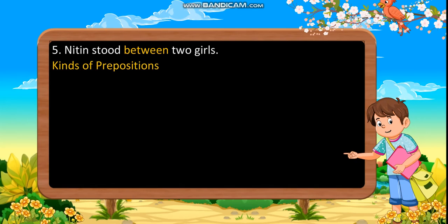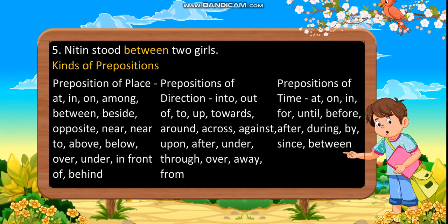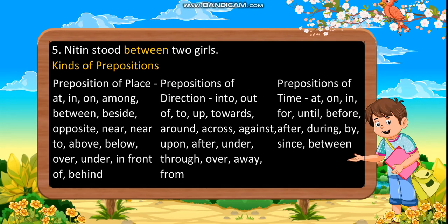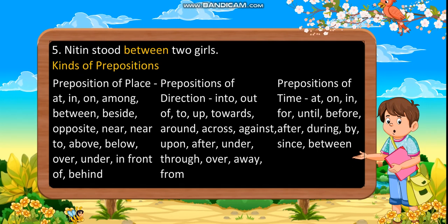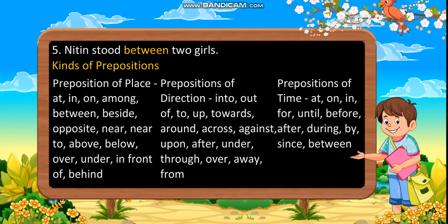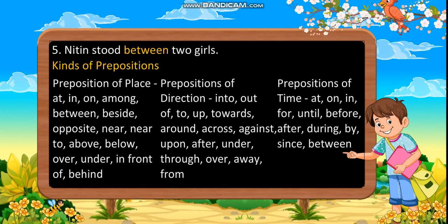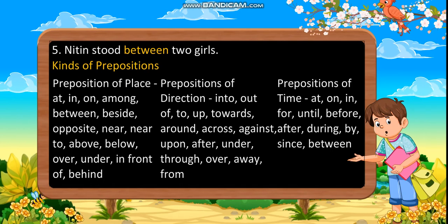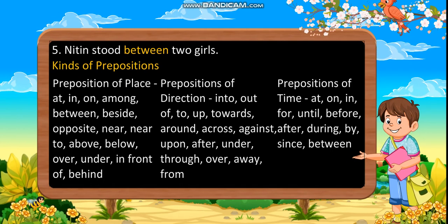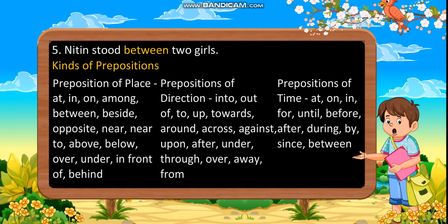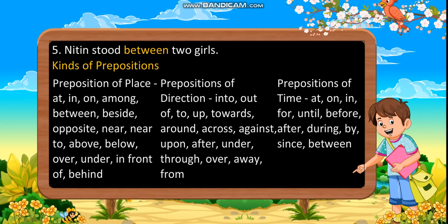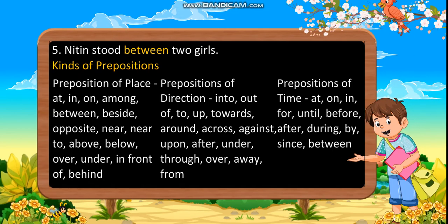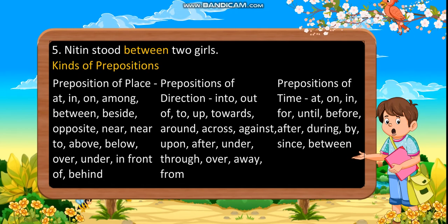Kinds of prepositions. Preposition of place: at, in, on, among, between, beside, opposite, near, near to, above, below, over, under, in front of, behind.